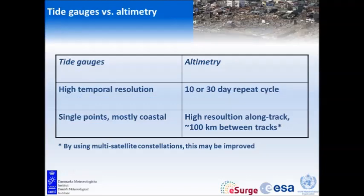If you want to have sea level measurements, you have two different options. You have tide gauges — in situ measurements — and you have altimetry. Tide gauges have high temporal resolution; we've heard about hourly data, you can get 10-minute data, even one-minute data if that's what you want. But they are single points and mostly at the coast.